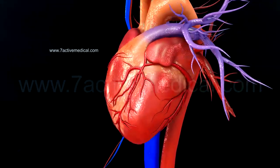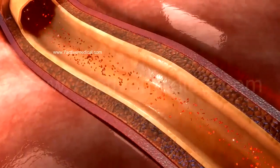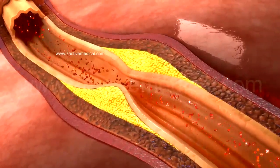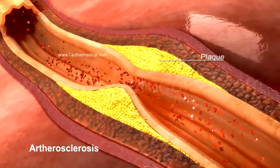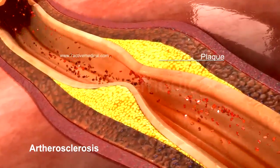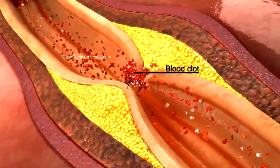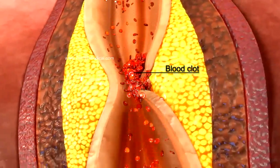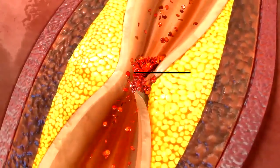In acute coronary syndrome, there is a blockage in the blood flow through the coronary arteries, usually due to an atherosclerotic plaque, a coronary artery spasm, or a coronary artery dissection. In atherosclerosis, the continued deposition of a fatty plaque results in the narrowing of the involved coronary artery. The rupture of this plaque results in the formation of a blood clot, thereby causing a blockage of the involved coronary artery. The formation of a blood clot is the most common cause of a coronary artery blockage.